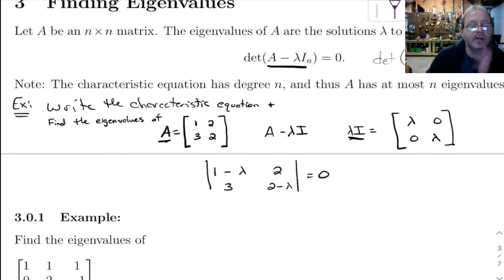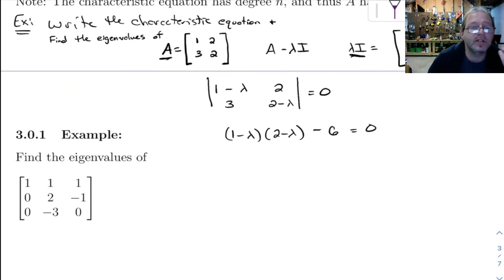And so now we have to work this out. Well, we're going to set this determinant equal to 0. So to work it out, we get 1 minus lambda times 2 minus lambda minus 6 equals 0. And we just have to solve this equation.